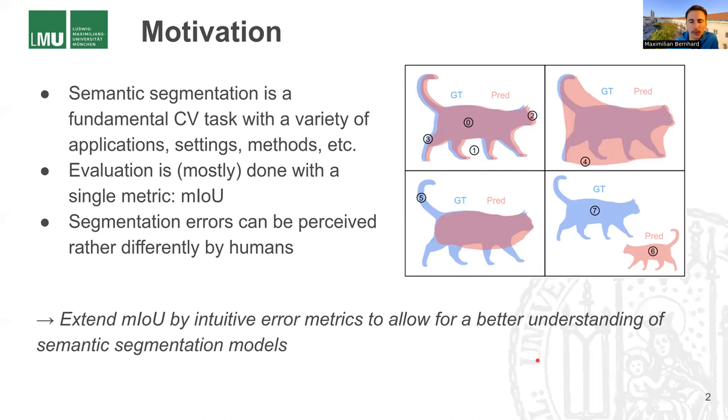We are considering the task of semantic image segmentation, which is a fundamental task in computer vision with lots of different applications in different domains. There are different training settings and a lot of different methods, especially different architectures. So it's a very diverse task.